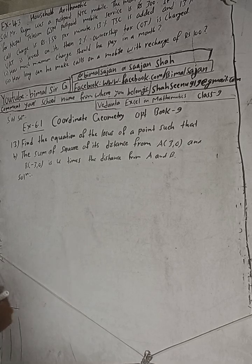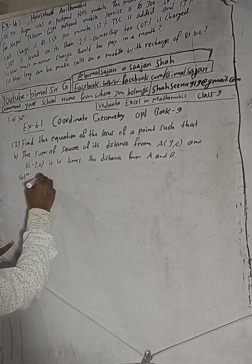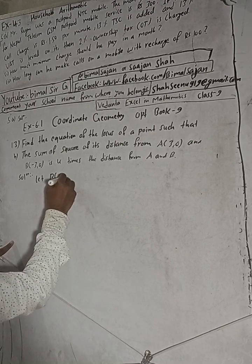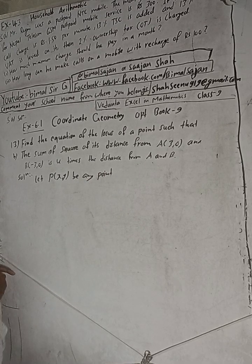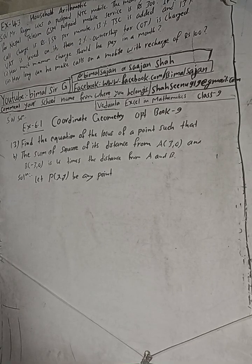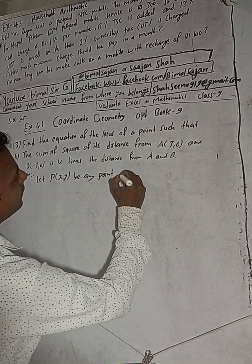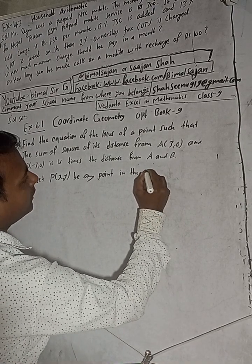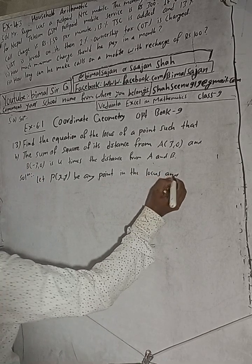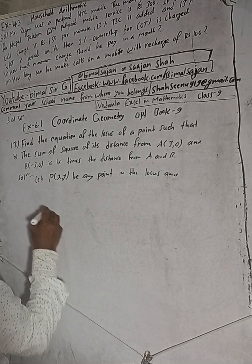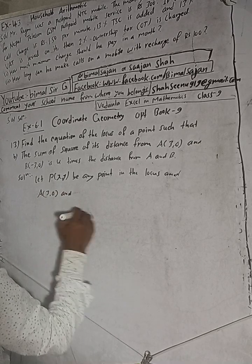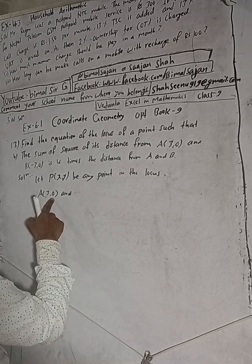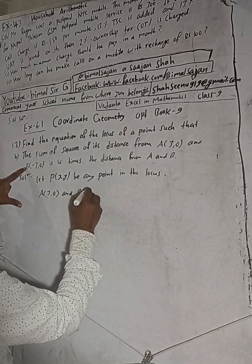Let P(x, y) be any point in the locus. The given points are A(3, 0) and B(-3, 0). P is any point on the locus.